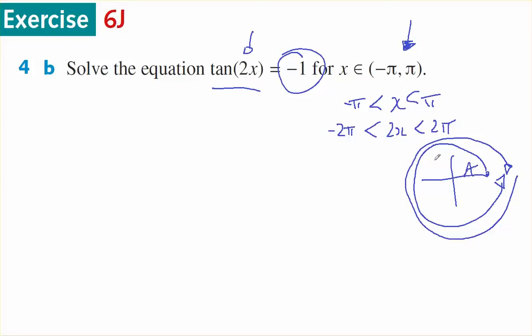Where is tan negative? It's negative in the second and fourth quadrants. In the first quadrant, what tangent gives an answer of 1? π/4 is the answer.